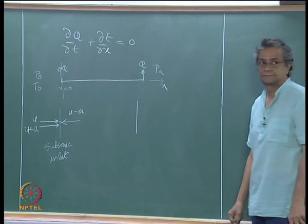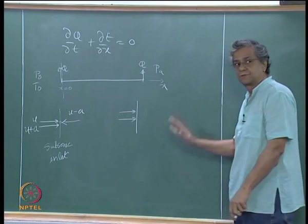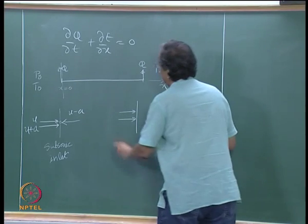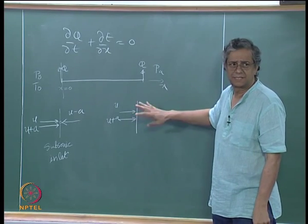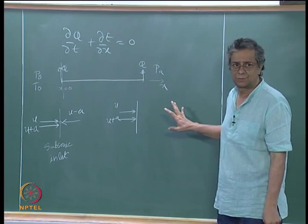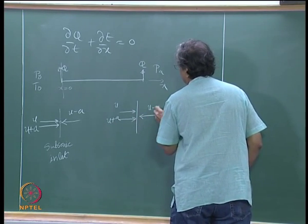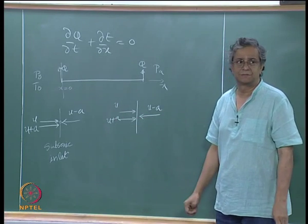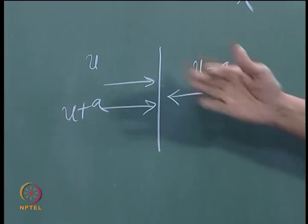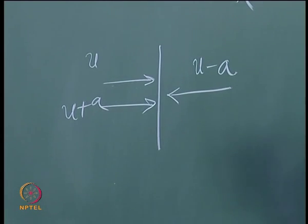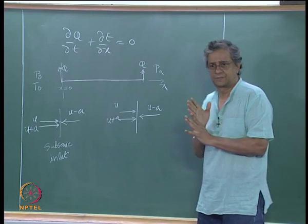In a similar fashion, at the exit interface on the right-hand side, we have u and u+a propagating outward. Note these are not drawn in the x-t plane; I am only indicating the direction of propagation. The u−a characteristic propagates in the opposite direction. So q̂3 is being propagated into the domain from the exit, while q̂1 and q̂2 are propagated out of the domain. That is what I see in characteristic coordinates at the interface.